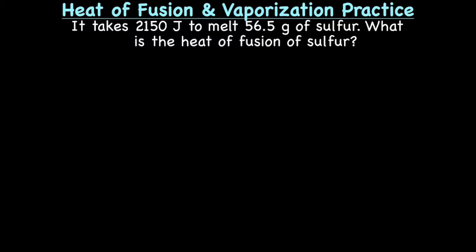Practice problem 2. If you can, hit pause, try to do this without me, and then hit play and see how it went. This time we are looking at heat of fusion. So we'll be using the formula Q = m × ΔH_fus. This time they give us a heat unit, so that must be our Q. So we'll have 2,150 joules equals the mass, which is 56.5 grams, and what we're trying to find this time is the heat of fusion.